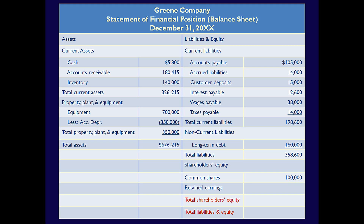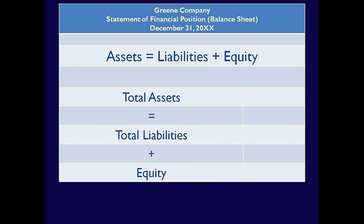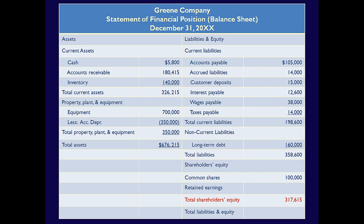Let's go back to our understanding of the accounting equation to figure this out. The accounting equation is assets equals liabilities plus equity. For this statement, I know that assets are $676,215 and liabilities are $358,600. Using the equation, I can solve for equity: equity is $317,615. Knowing that equity equals common shares plus retained earnings, and that common shares are $100,000, I now know that retained earnings is $217,615. I can now fill in the total liabilities and equity amount of $676,215 — because total assets always equal total liabilities plus equity.